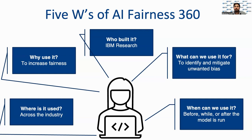It can identify bias in datasets. The toolkit can be used in several industries where privileged, underprivileged, protected, and unprotected groups get affected due to the outcome of AI algorithms. To identify the existence of bias and to mitigate it, the toolkit can be used before running the ML model, during the running of an ML model, or after the run of an ML model.